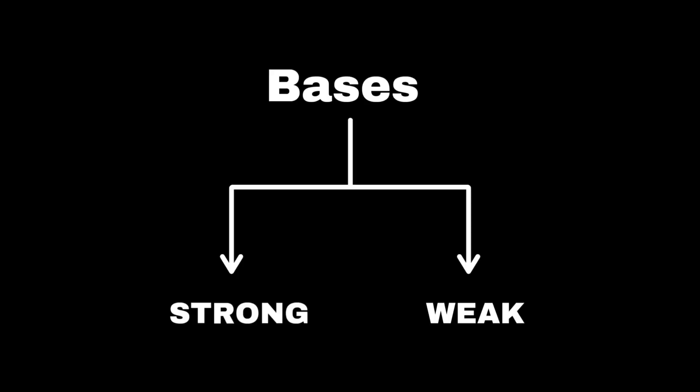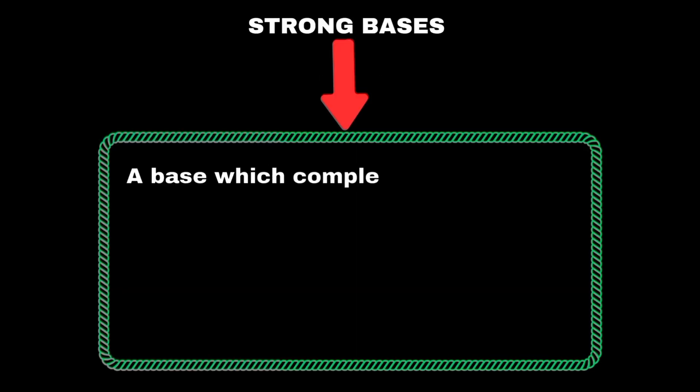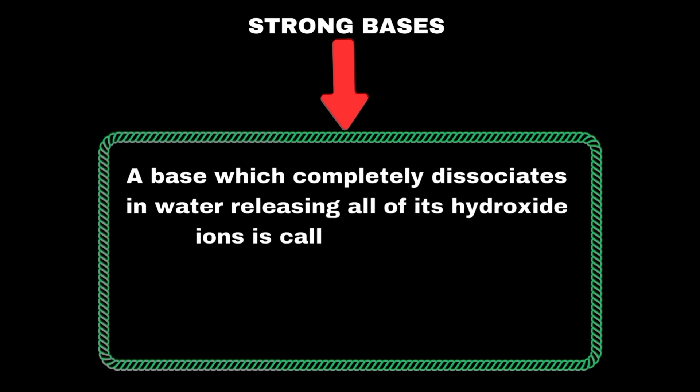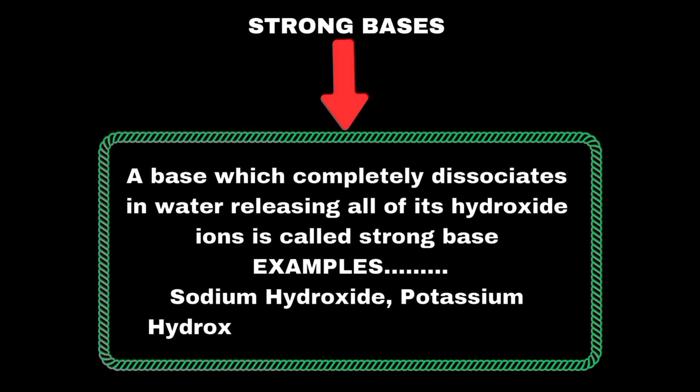Bases can also be classified as strong and weak bases. A base that completely dissociates in water, releasing all of its hydroxide ions, is called strong base. Some common examples of strong bases are sodium hydroxide, potassium hydroxide, and calcium hydroxide.